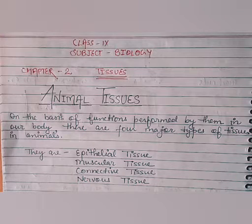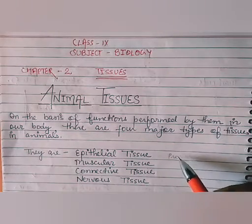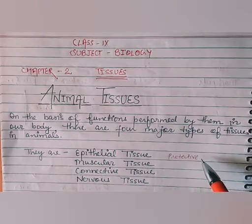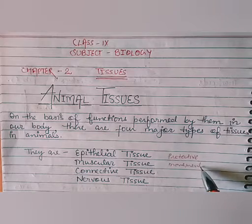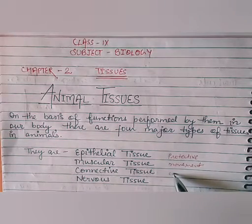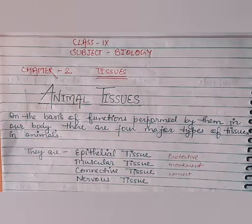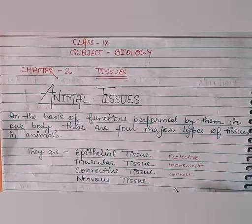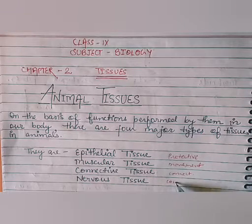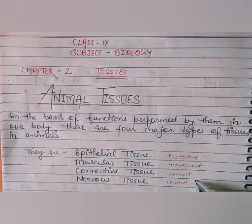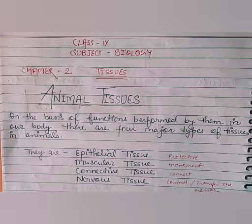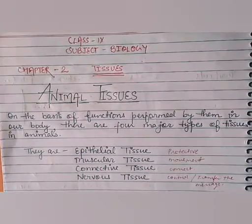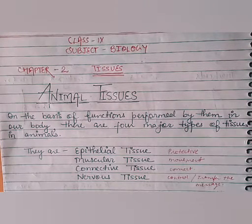Epithelial tissues are the protective tissue which protect the animal's body and its organs. Muscular tissues are responsible for movement. Connective tissue connects other kinds of tissue together. Nervous tissues help in control and coordination and transfer messages from one part of the body to another — from organs to the brain and from the brain to the organs. We will discuss each of these tissues in detail.